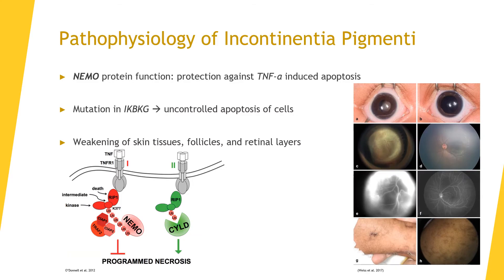One of the functions of the NEMO protein, other than modulating NF-kappaB, is protection against TNF-alpha induced apoptosis of healthy body cells. So the mutation in IKBKG, which encodes for the NEMO protein, results in uncontrolled apoptosis of cells.